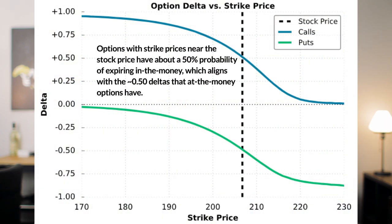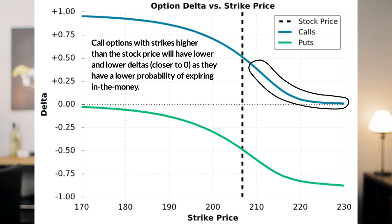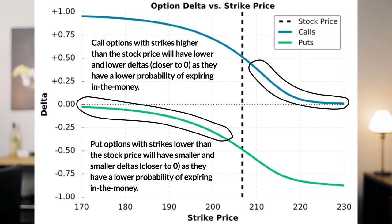This helps explain why options with strike prices near the stock price have deltas around 0.50, suggesting around a 50% probability of expiring in the money. Since stock prices are said to be random, there's theoretically a 50% chance that the stock price will be above or below its current price in the future, which is why at-the-money options will often have deltas right around positive or negative 0.50. For call options at higher strike prices, the deltas get closer and closer to zero as the probability of a huge stock price increase is lower. Similarly, put options at lower and lower strike prices have deltas closer to zero, as the probability of a huge stock price decrease is less than the probability of a small stock price decrease.